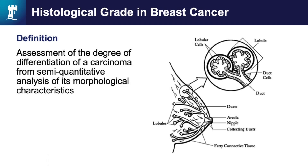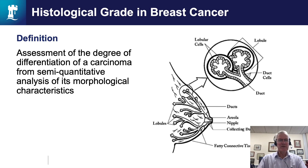This is the first of two mini tutorials given by Professor Ian Ellis, an internationally renowned professor of breast pathology based in Nottingham. These videos form part of the educational portal of the UK Breast Pathology EQA Scheme. This podcast is one of a series on aspects of breast pathology. In this presentation we're going to look at background information relating to histological grade in breast cancer.